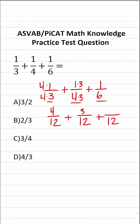1 times 3 is 3. To write 6 as 12, we would have to multiply it by 2, and we also have to do that to its numerator. 6 times 2 is 12, and 1 times 2 is 2. Now that we have fractions with the same denominator, we can go ahead and add them. We're going to keep our denominator the same and just add our numerators: 4 plus 3 plus 2.